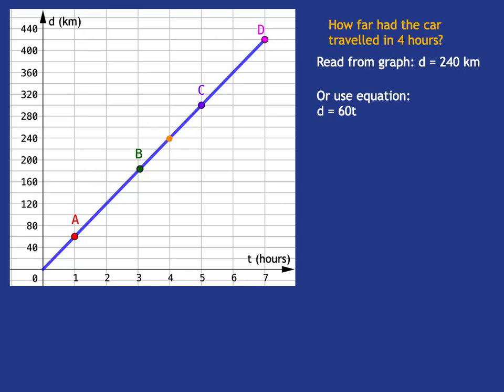Equation, so we could go distance is 60 times time. And here we're talking about the time being 4, so we could calculate 60 times 4, and we'd get 240. So either way, read it from the graph, or use the equation.